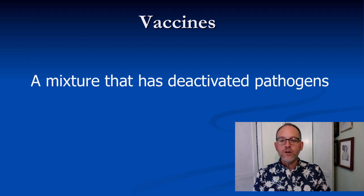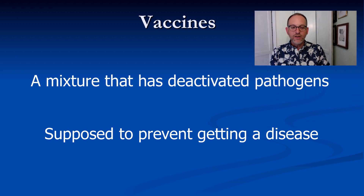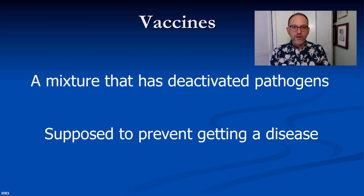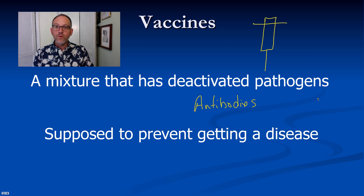A vaccine is a mixture of deactivated pathogens, and it's supposed to prevent you from getting a disease — that shot you get every year. It injects those pathogens into you, which forces your body to make more antibodies so you have the ability to fight off the disease before you even get sick. It's kind of like building up the army before you have to go into battle.